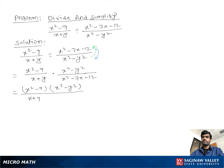Now we factor each expression. The factor of x² - 9 is (x + 3)(x - 3). The factor of x² - y² is (x + y)(x - y). The denominator keeps (x + y) as it is.